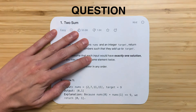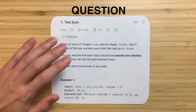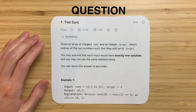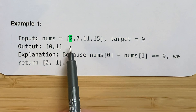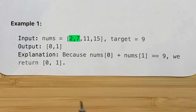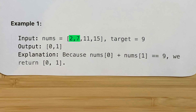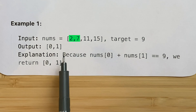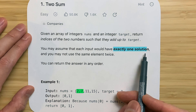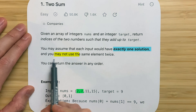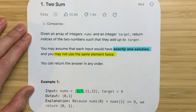We're given an array of integers, and we want to return indices of the two elements that add up to a target. For example, 2 and 7 add up to our target 9, so we return the indices for 2 and 7, which are 0 and 1. There's exactly one solution, and we cannot use the same element twice.